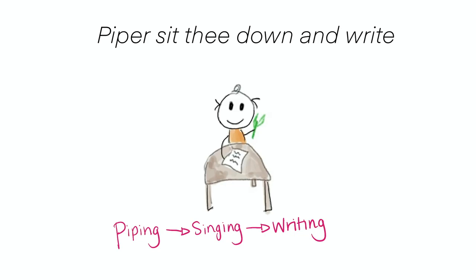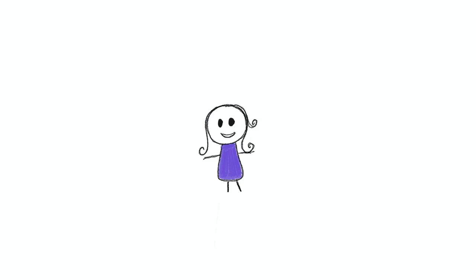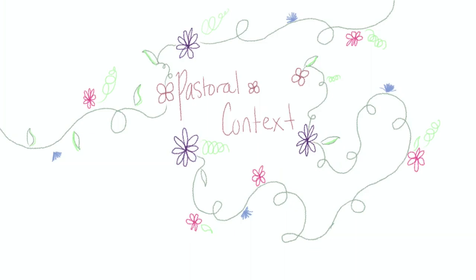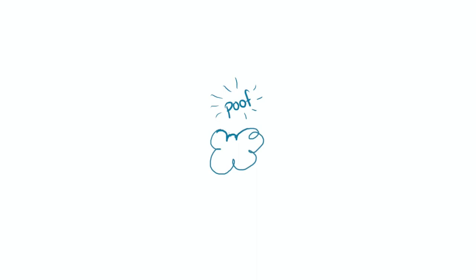The next part says 'Piper, sit thee down and write in a book that all may read.' The piper has gone from piping, to singing, and now to writing the song down — much like Blake himself turning all of this into a poem. He has turned music and song into a tangible thing. He stays within the pastoral context as he plucks a hollow reed and makes a rural pen out of it. The child suddenly vanishing could mean that the child has finally grown up, that they are no longer in the state of innocence, no longer floating in a cloud above the piper.